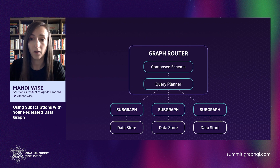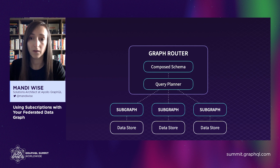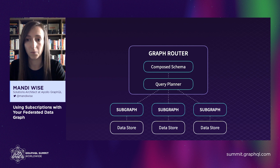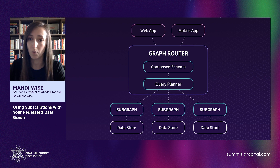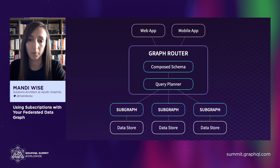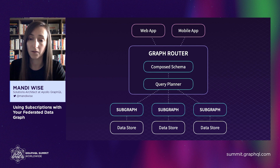Apollo Gateway takes a declarative approach to composing subgraphs together and handles query planning for us, so we don't have to deal with the imperative pain points of other approaches to designing distributed GraphQL architectures. That means back-end teams can independently manage their portions of the datagraph while still exposing a single GraphQL endpoint to client developers. At the moment, this works well for query and mutation operations, but out of the box, Apollo Federation doesn't support subscription operations.